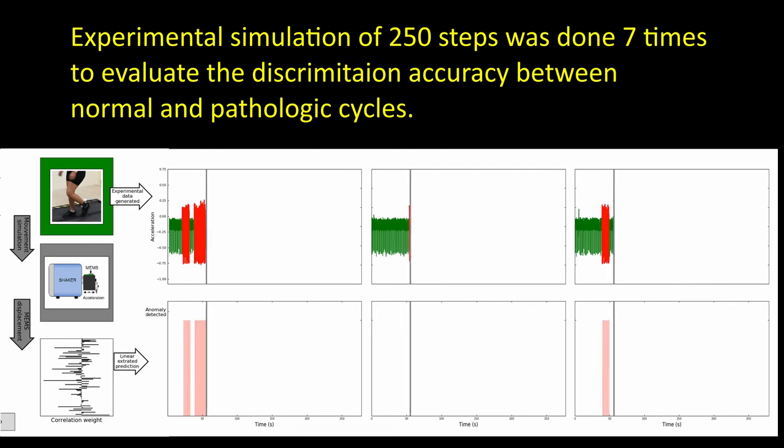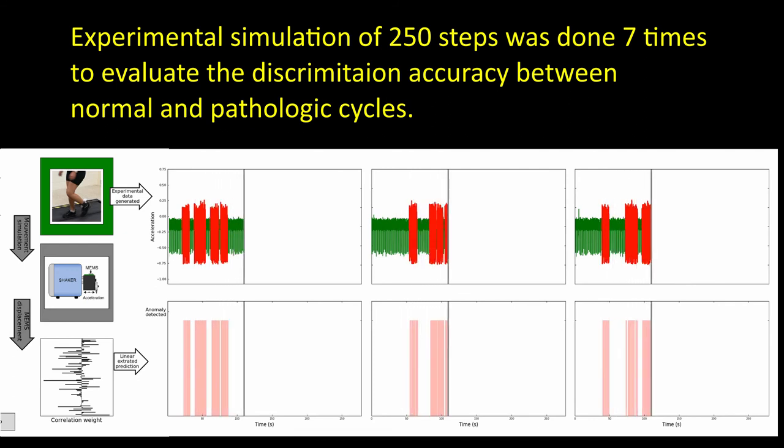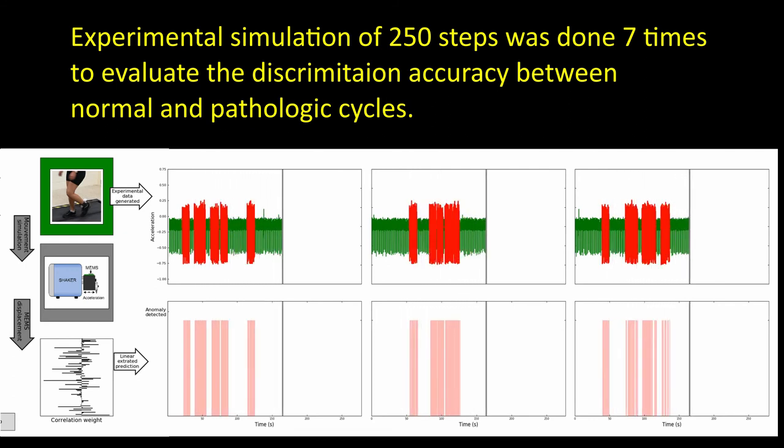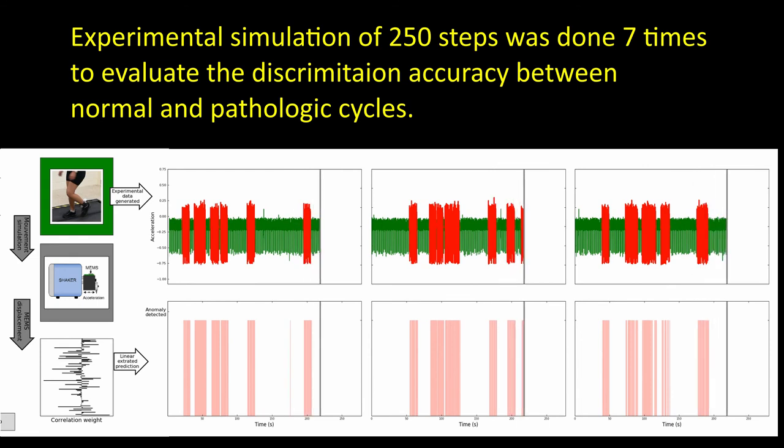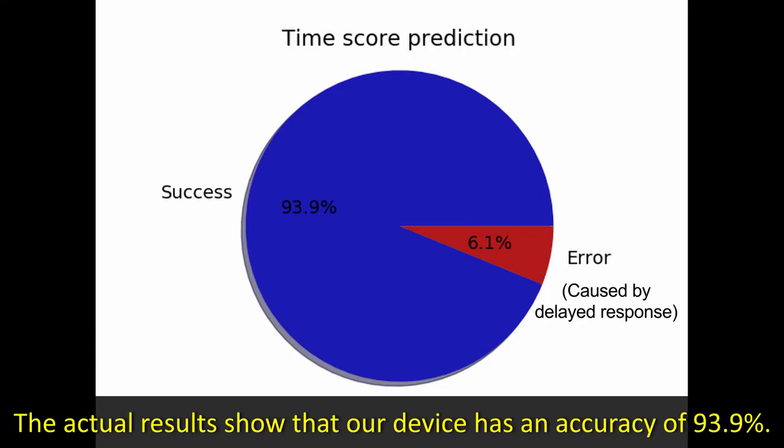Experimental simulation of 250 steps is done 7 times to evaluate the discrimination accuracy between normal and pathologic cycles. The results show that our device has an accuracy of 93.9%.